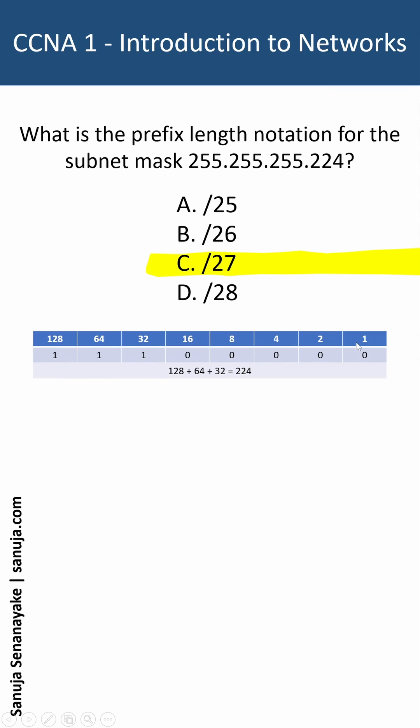And in this 8-bit configuration, we have 128, 64, and 32. If you add 128 plus 64 plus 32, it will give you 224, and that's what this last octet is telling us.